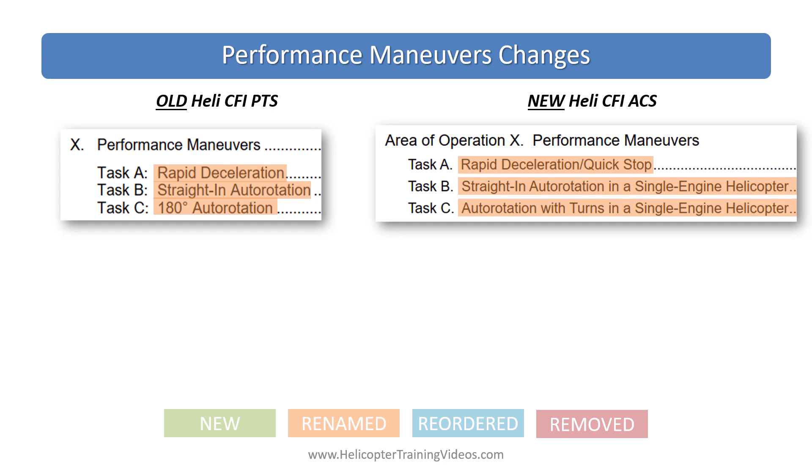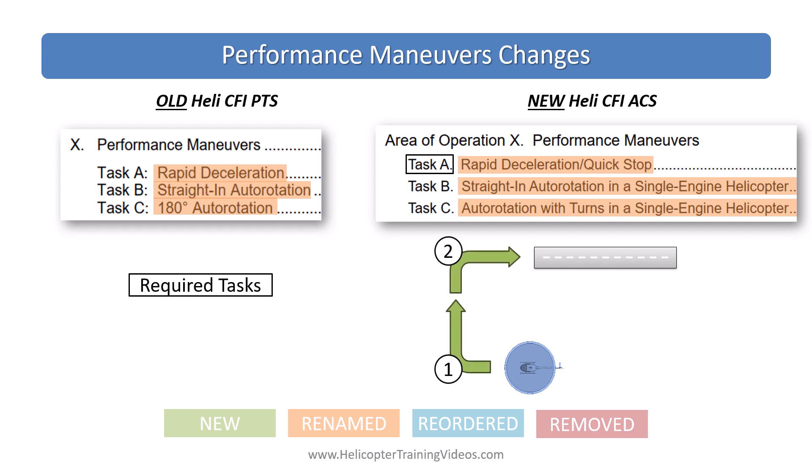In the performance maneuvers area of operation: rapid deceleration is now 'rapid deceleration/quick stop.' Straight-in autorotation and 180 autorotation now add 'in a single engine helicopter' to the title, as well as renaming the 180 auto to 'autorotation with turns,' which means you can do multiple turns to complete the maneuver — it doesn't have to be one continuous 180. The required tasks have changed: in the old PTS it was just selecting at least one maneuver A, B, or C. Now in the ACS it's Task A rapid deceleration and at least one other, so you now have at least two tasks and one will definitely be rapid decel.